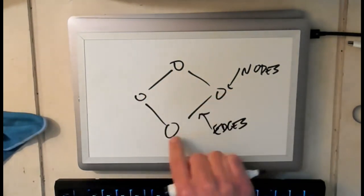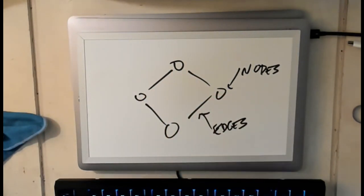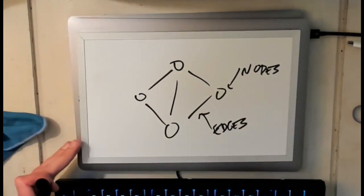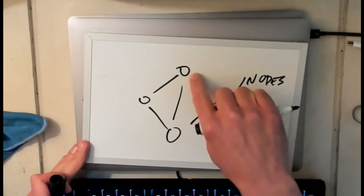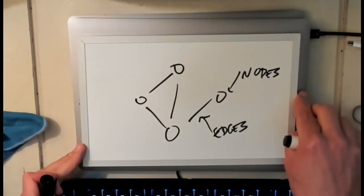So in this case I have four nodes in my graph and I have four edges between them but I could have more or I could have the graph look a little bit different like this for example.